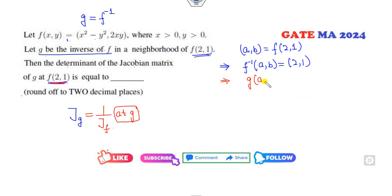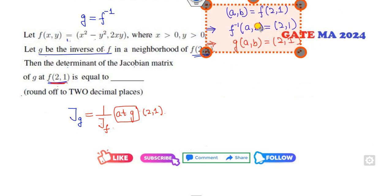So what you conclude from that? It means your target is to find the value of this Jacobian at the point 2, 1 only. So that is very simple now. I can copy this here.